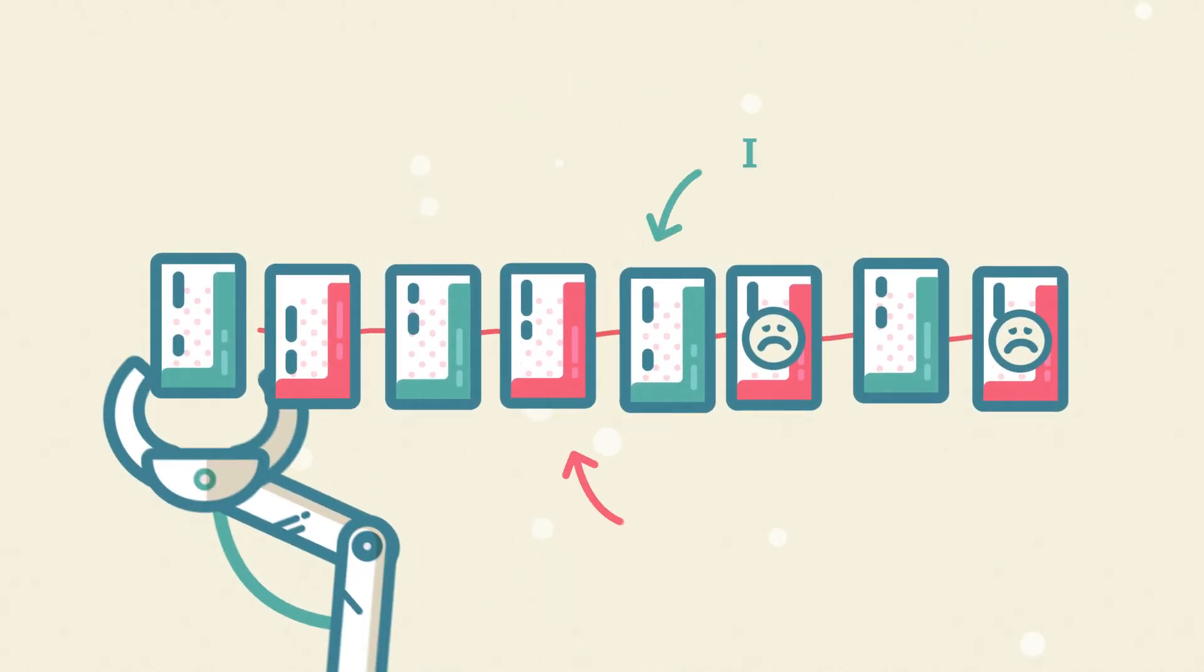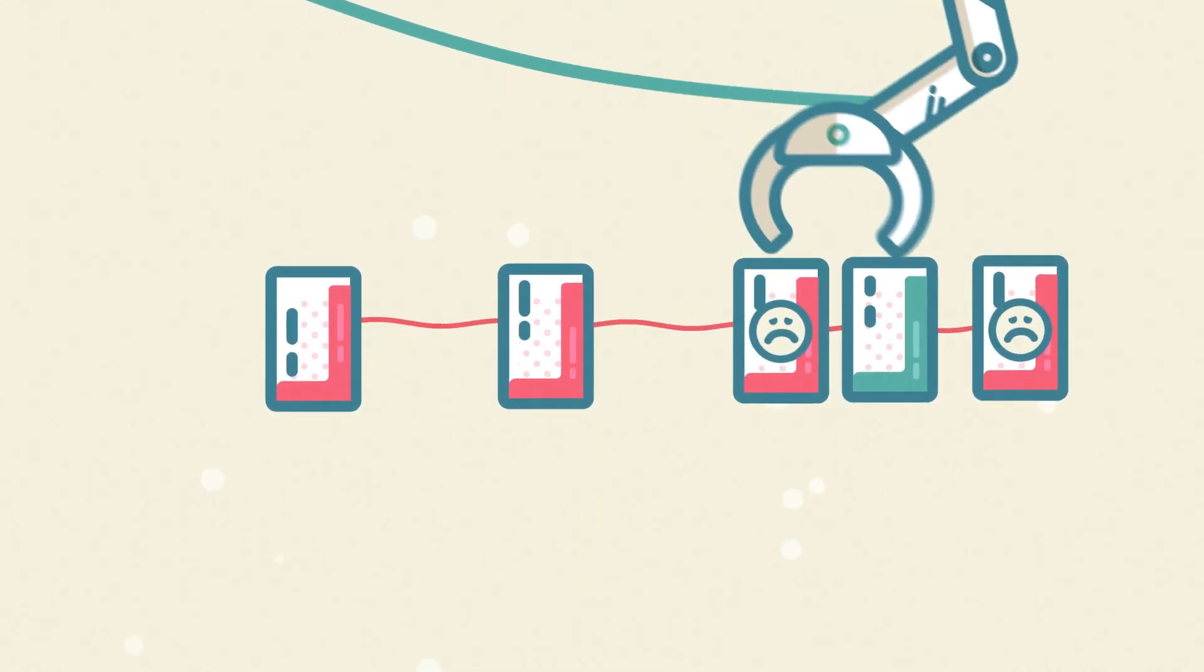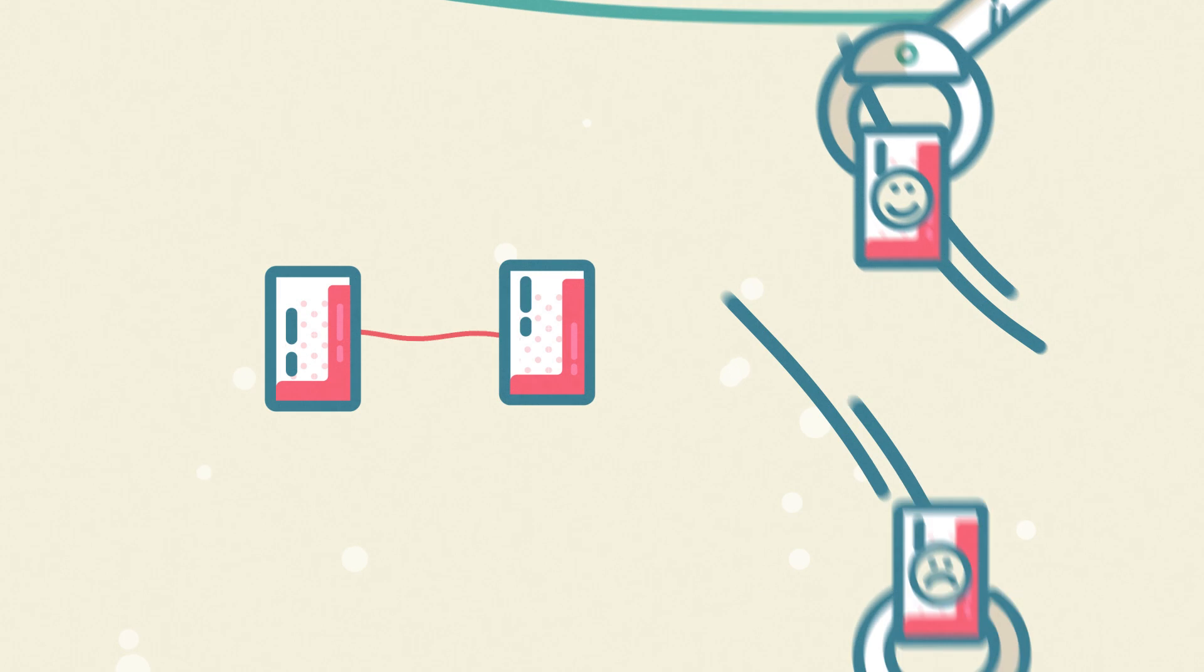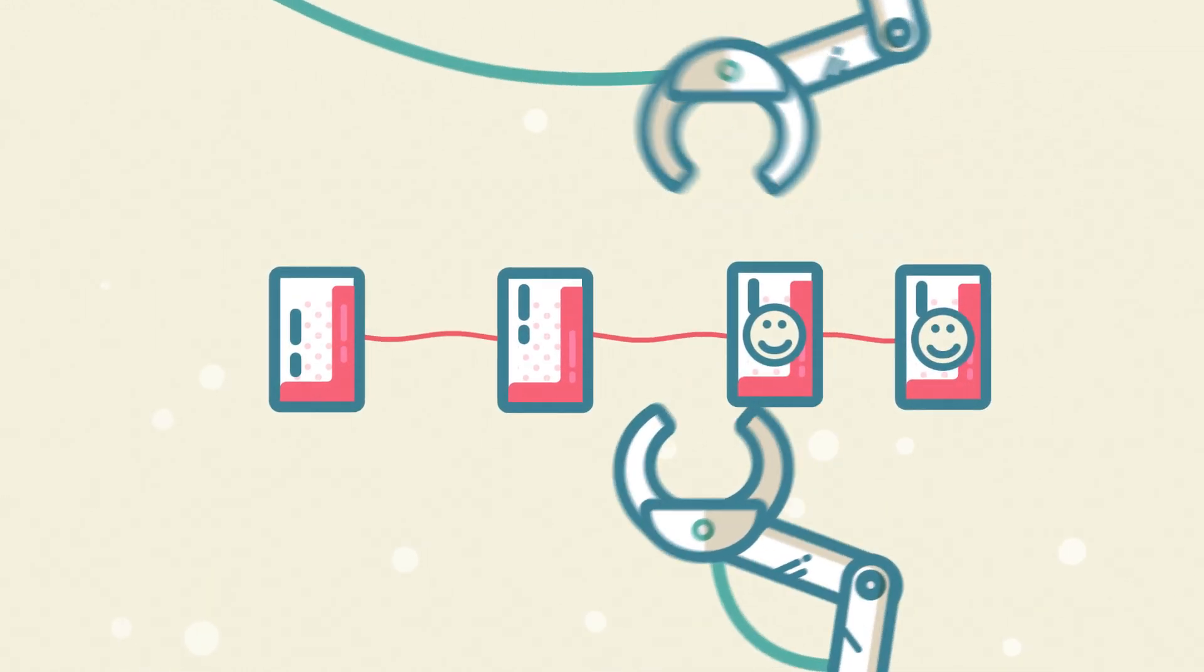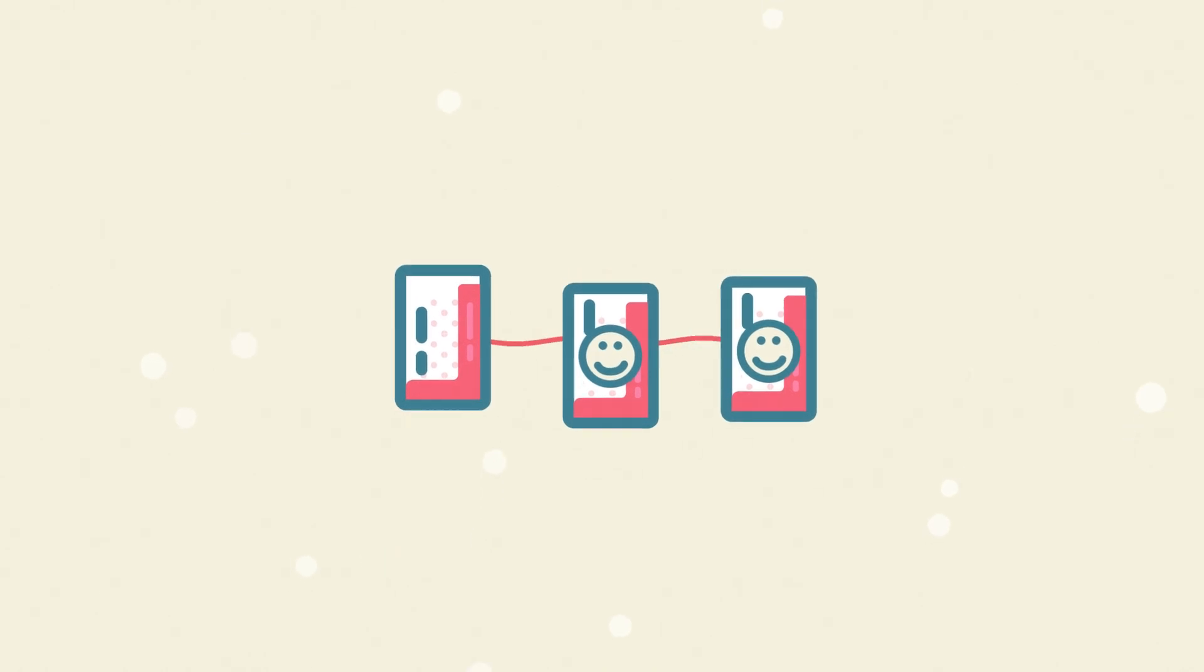Now here comes the really exciting part. The spliceosome's normal process can be hijacked and used to our advantage by splicing out the exons that contain mutations and splicing in healthy exons that are delivered via vector. There are two big advantages to the SMART approach.